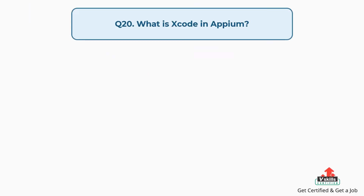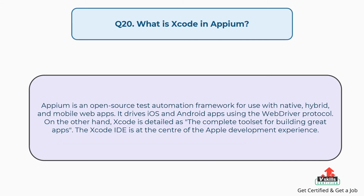Question number 20: What is Xcode in Appium? Appium is an open source test automation framework for use with native, hybrid, and mobile web apps. It drives iOS and Android apps using the web driver protocol. Xcode, on the other hand, is described as the complete toolset for building great apps, and the Xcode IDE is at the center of the Apple development experience.